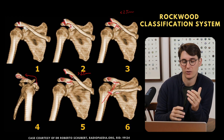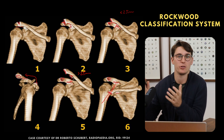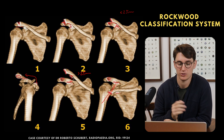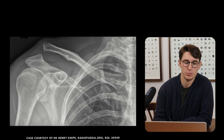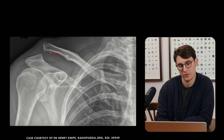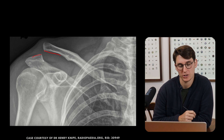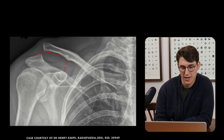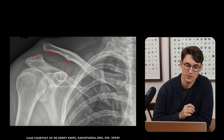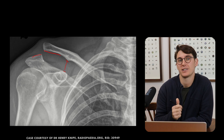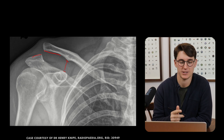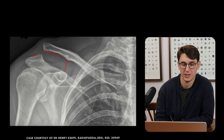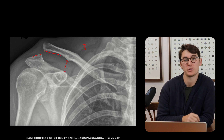When looking at an x-ray, you can confidently give a Rockwood classification so that someone who can't see the x-ray would understand the extent of the injury. In this example, the inferior border of the clavicle is higher than the superior border of the acromion — so we know we're dealing with Rockwood 3 or higher. The measured coracoclavicular distance is less than 25 millimeters, ruling out Rockwood 5, and there's no posterior displacement, so this is a Rockwood 3 disruption of the AC joint.